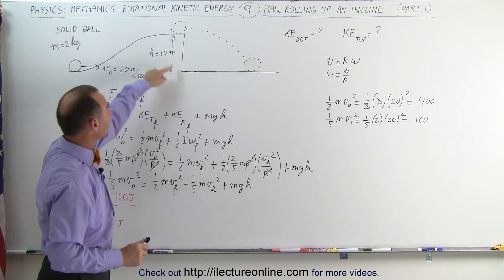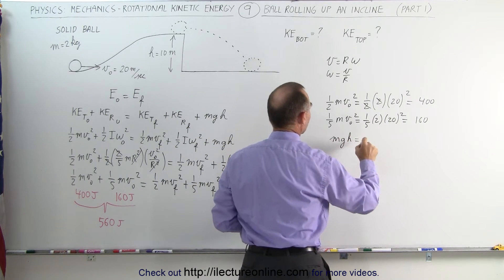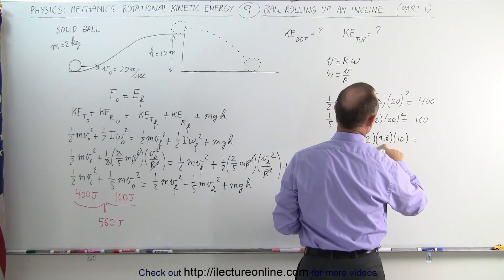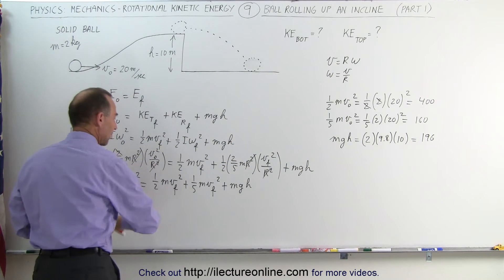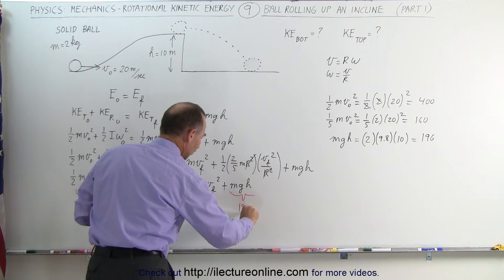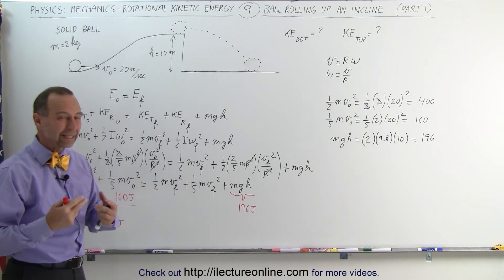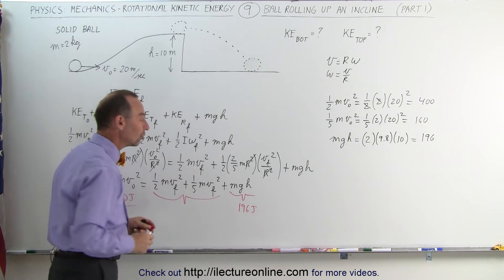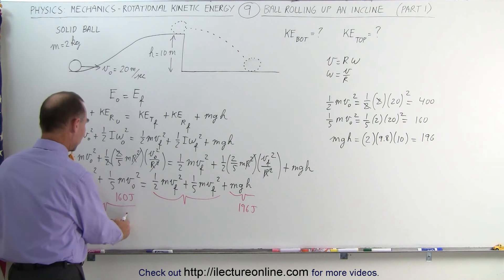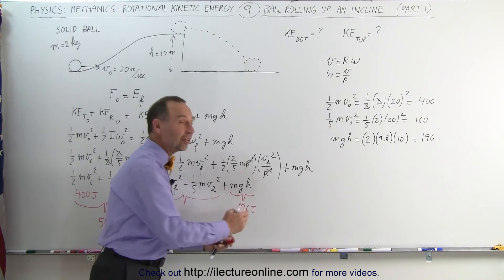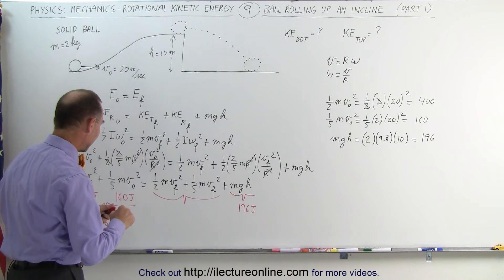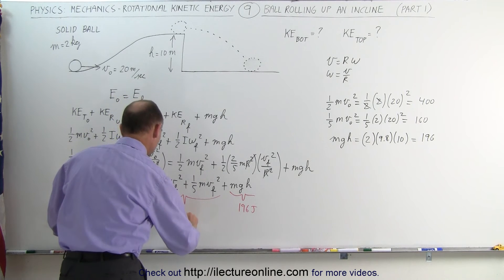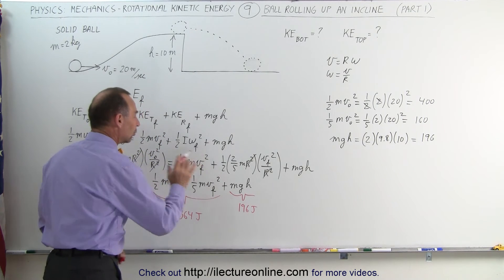Next, we find the potential energy MGH: 2 kilograms times 9.8 meters per second squared times 10 meters equals 196 joules. Without knowing the final velocity yet — we'll calculate that in part 2 — we can calculate the total kinetic energy at the top by subtracting the potential energy from the initial energy: 560 minus 196 equals 364 joules of kinetic energy, both translational and rotational combined.